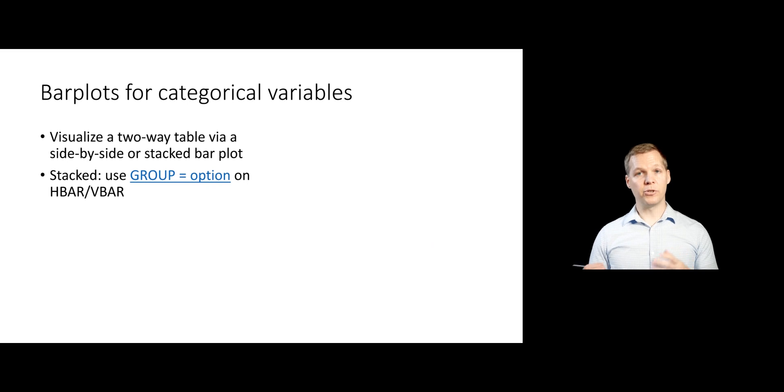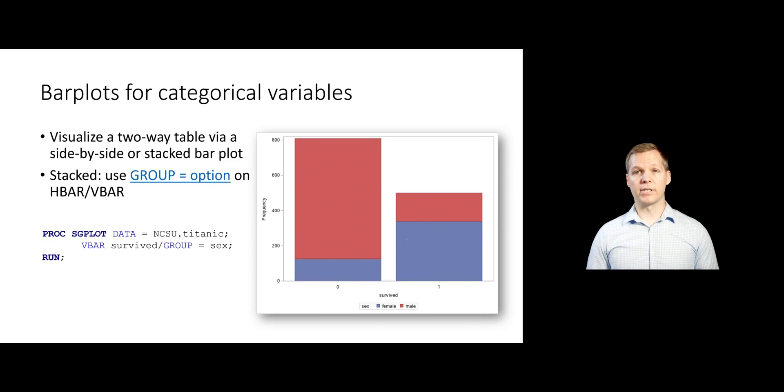We can take our two-way contingency tables and put them into bar plot form by adding in a group equal option on our HBAR or VBAR statement. For instance, if I wanted to look at that two-way contingency table between survived and sex, I can use a group equal sex option, and that will then color the bars based off of that grouping variable. And what's nice is that SAS automatically creates a legend for us so that we don't have to do all that kind of stuff manually.